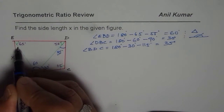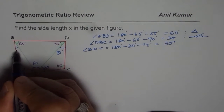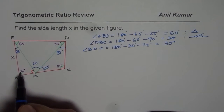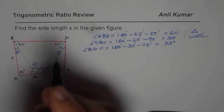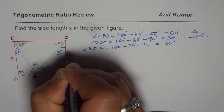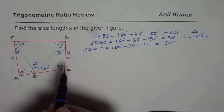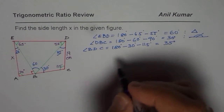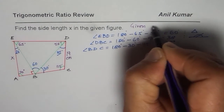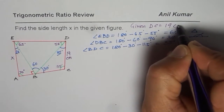This angle can also be written as 20 degrees, since this is 90 and 70 plus 20 is what we know. Now, the side given to us is DC, which is 19 centimeters. So DC equals 19 centimeters.